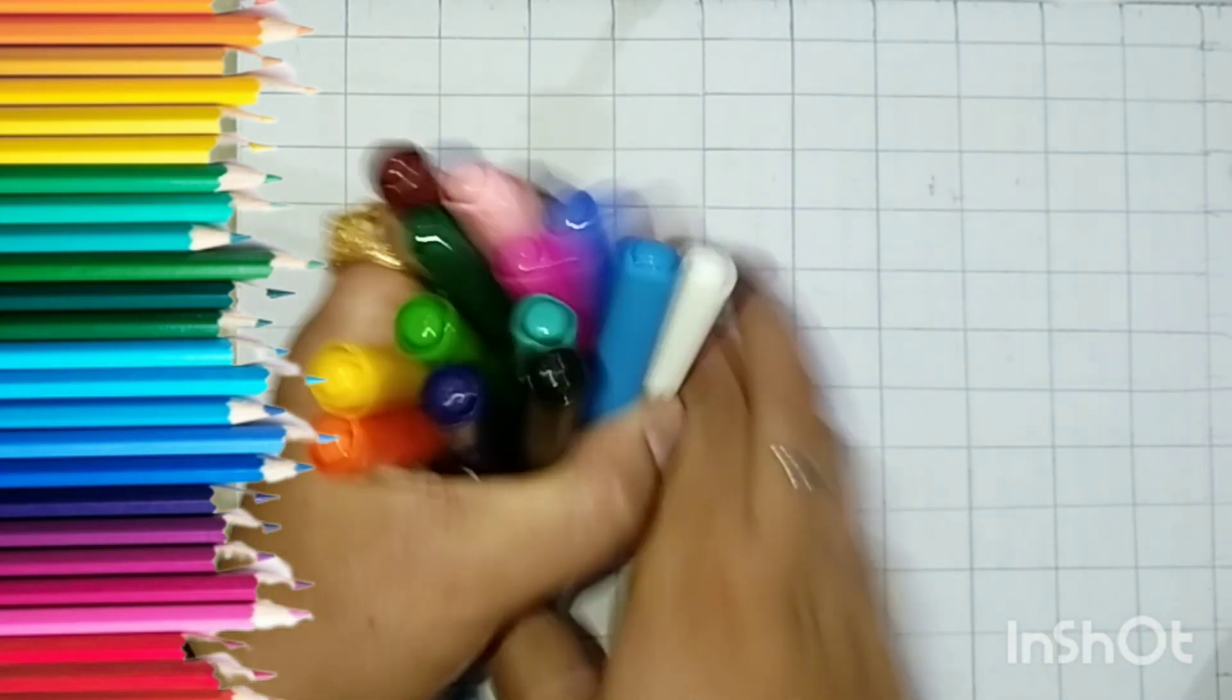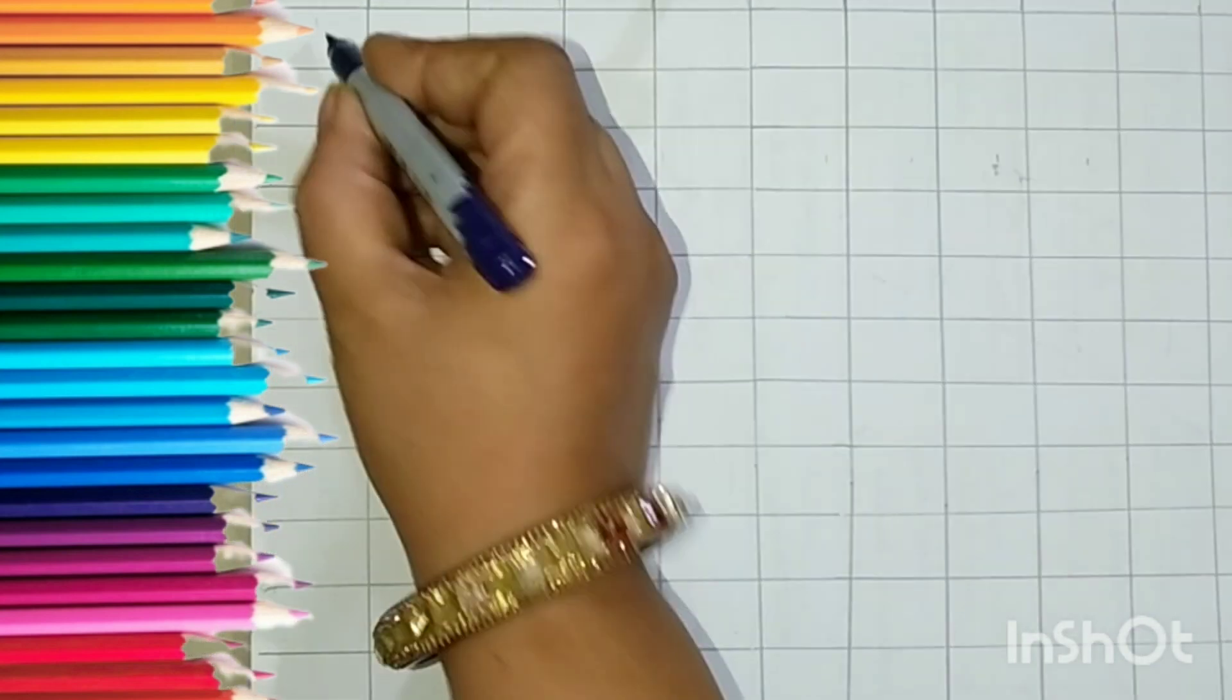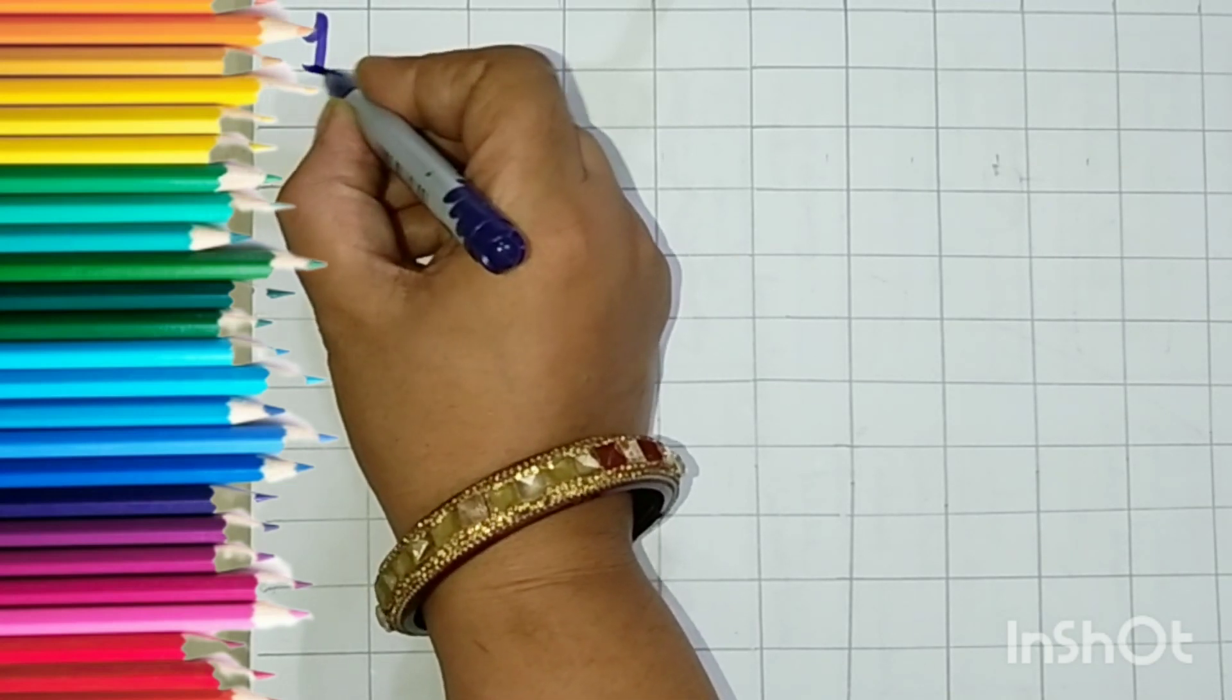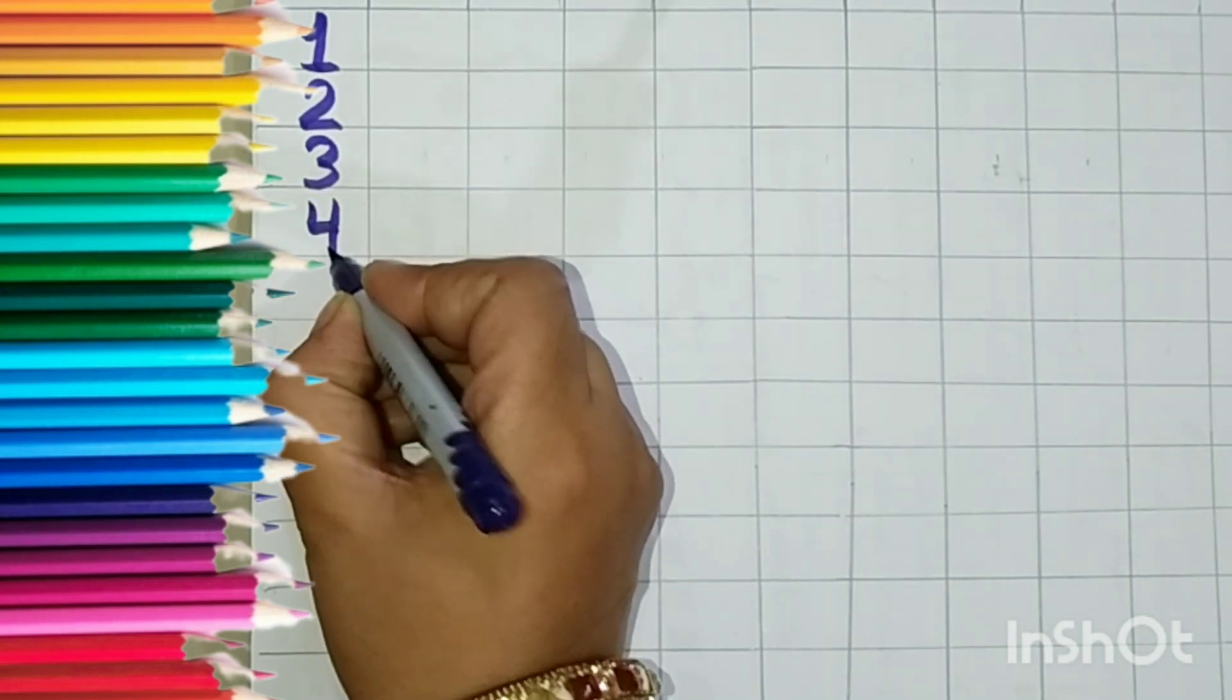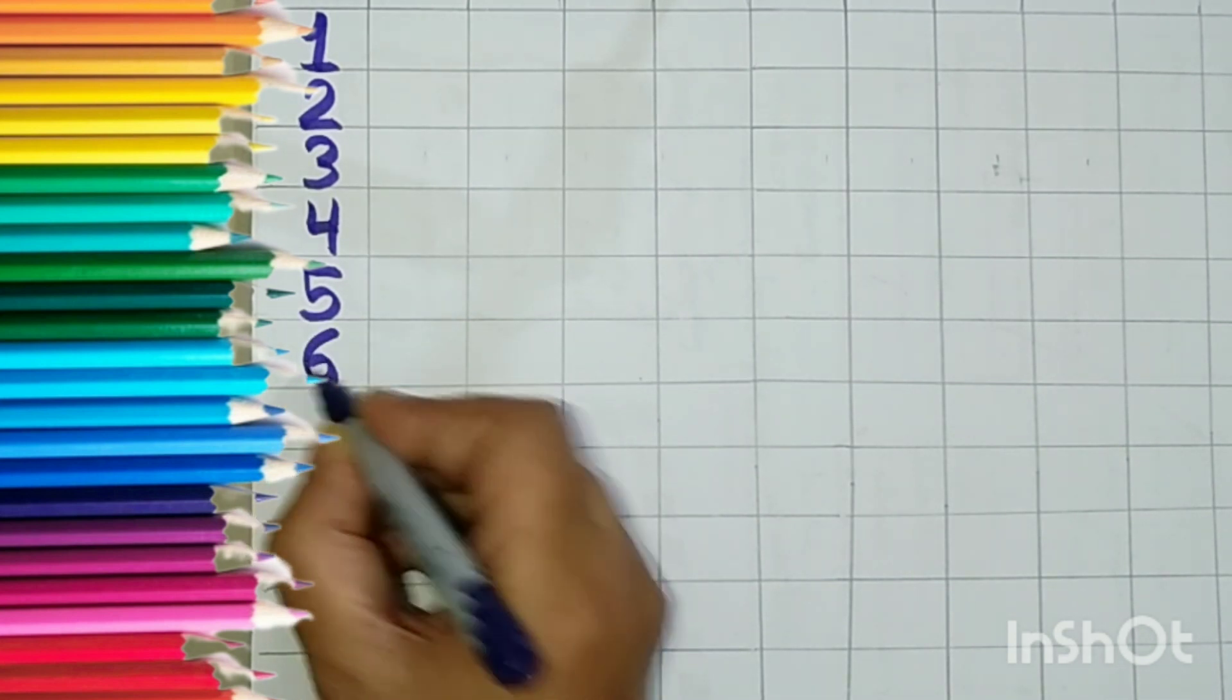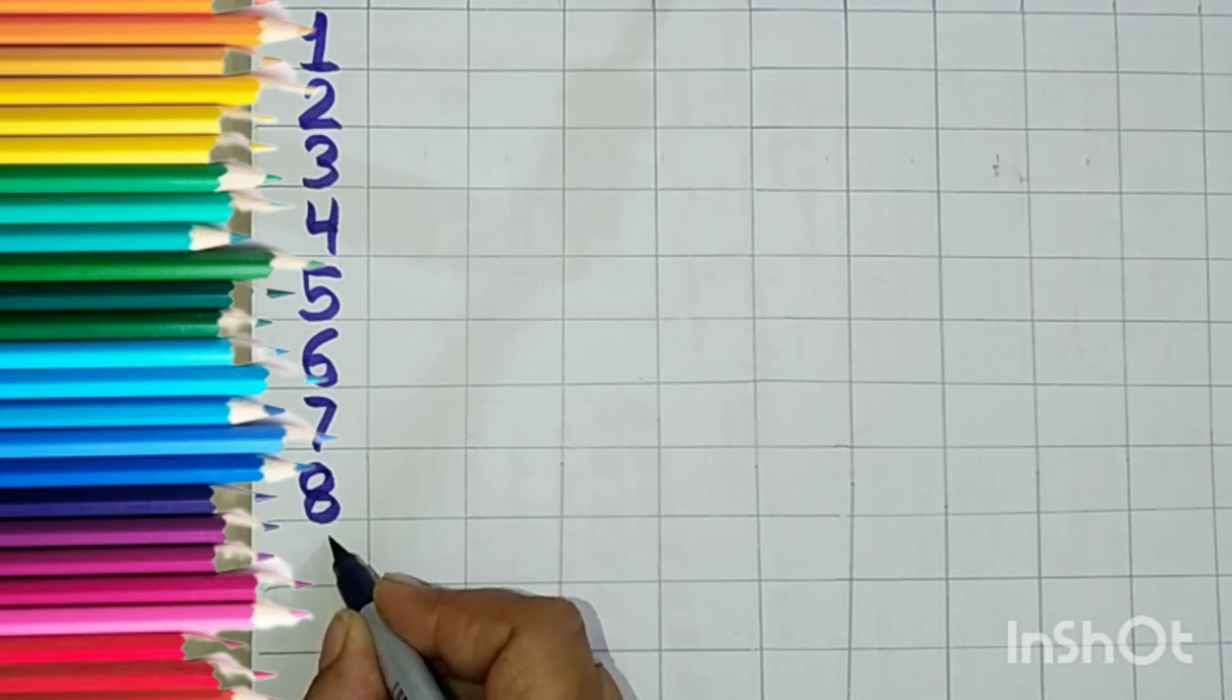Now let us start the counting. 1, 2, 3, 4, 5, 6, 7, 8, 9, 1, 0, 10.